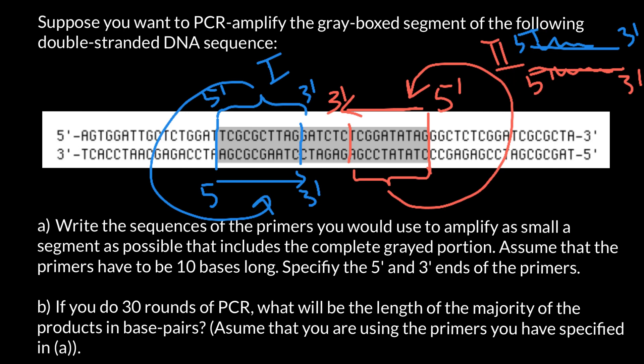So next question. Question B: If you do 30 rounds of PCR, what will be the length of the majority of the products in base pairs? Assume that you are using the primers you specified in question A. And it is easy. The majority of the product, the length of the product of course would be what is shown here in grey color. So let's just count. Once again, 10 bases here, 10 bases here. So 1, 2, 3, 4, 5, 6. So 26 bases would be our product.